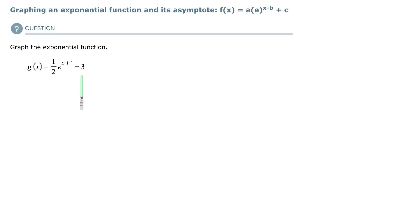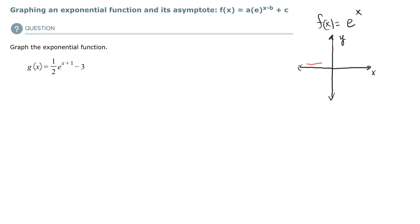Let's graph this exponential function. The most basic exponential function with the natural base e is e to the x, which is exponential growth since e is greater than 1. In its simplest form, from left to right it is increasing and increases rapidly in the first quadrant, with the ordered pair (0, 1). We'll move this function using transformations, or you can always pick ordered pairs as a decent approach.